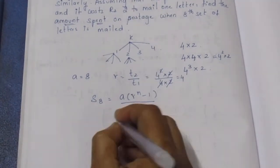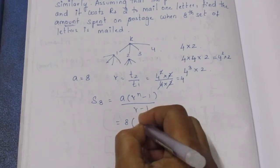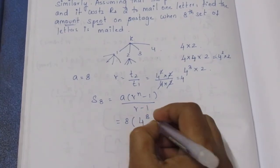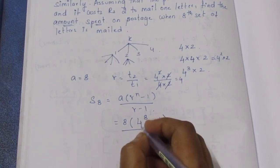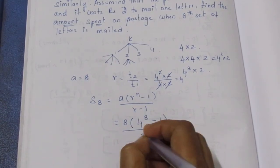Now A is 8, R is 4, 4 power 8 minus 1 by 4 minus 1.